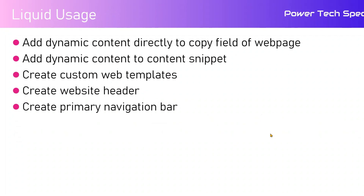Where is Liquid code being used in Power Pages? Liquid code is used to add dynamic content directly to the copy field of a web page, to create custom web templates, to create a website header or primary navigation bar, or to add dynamic content to content snippets. These are some areas, but there are more sections within Power Pages where you can utilize Liquid once you understand its fundamentals.